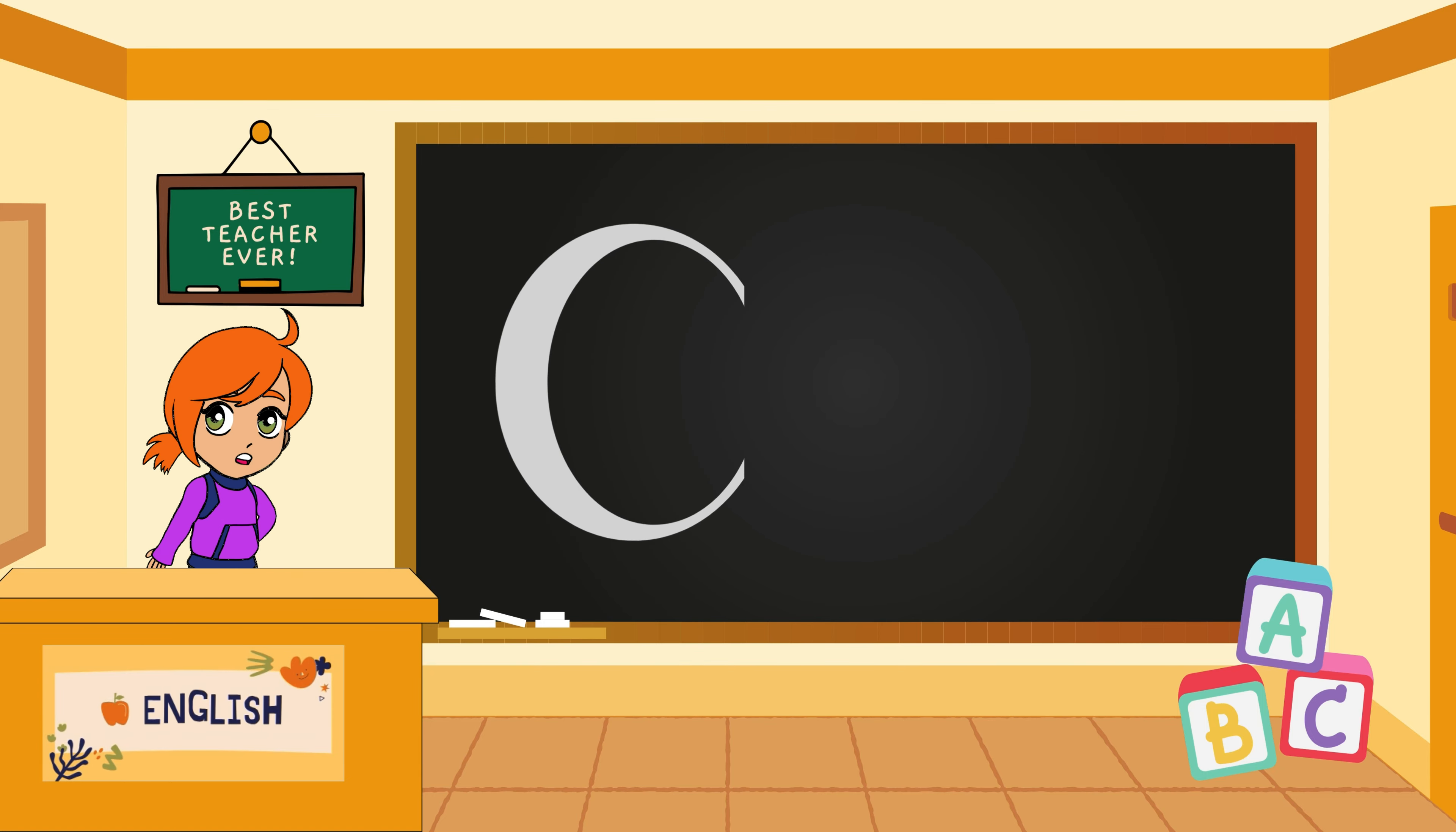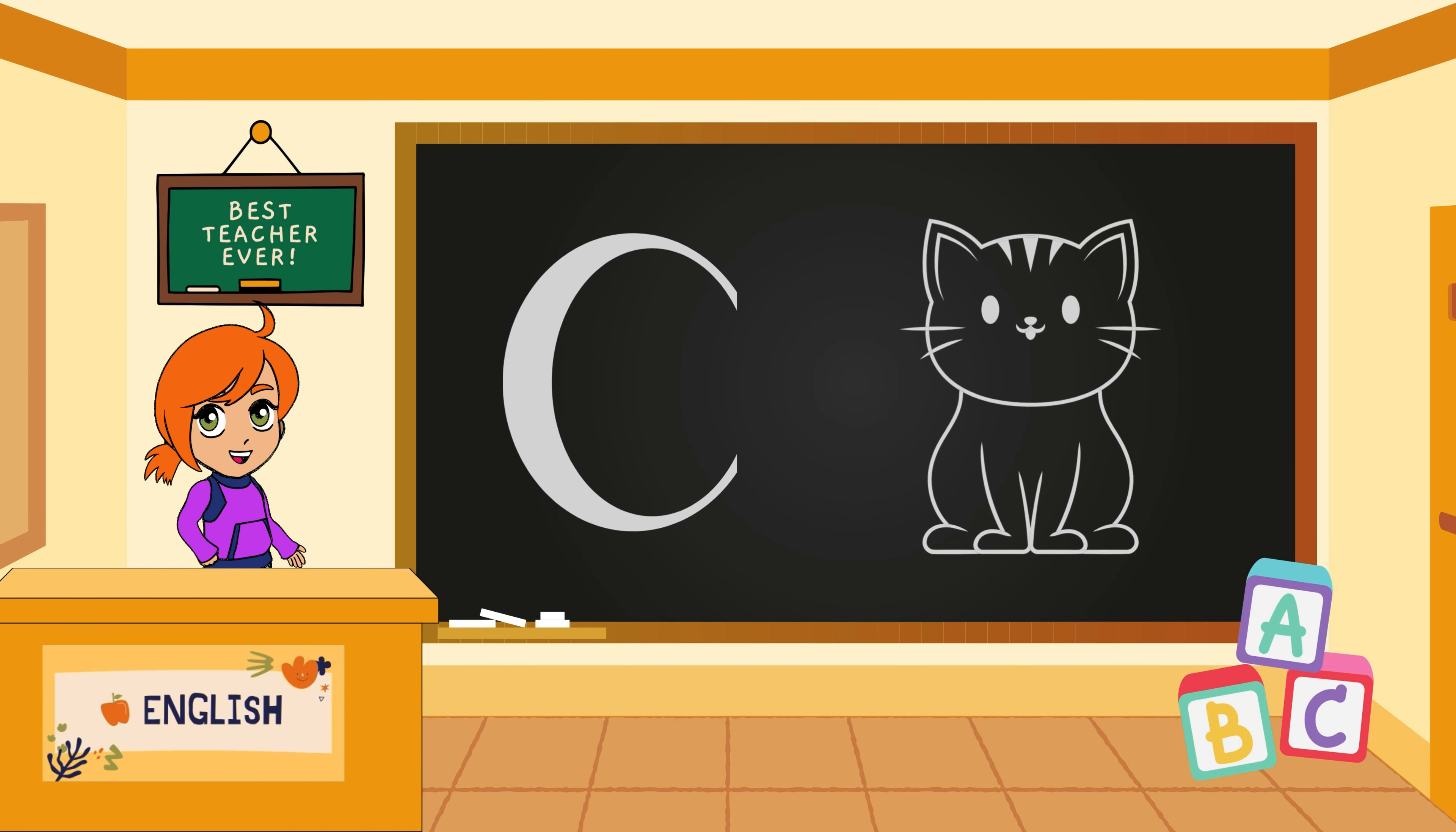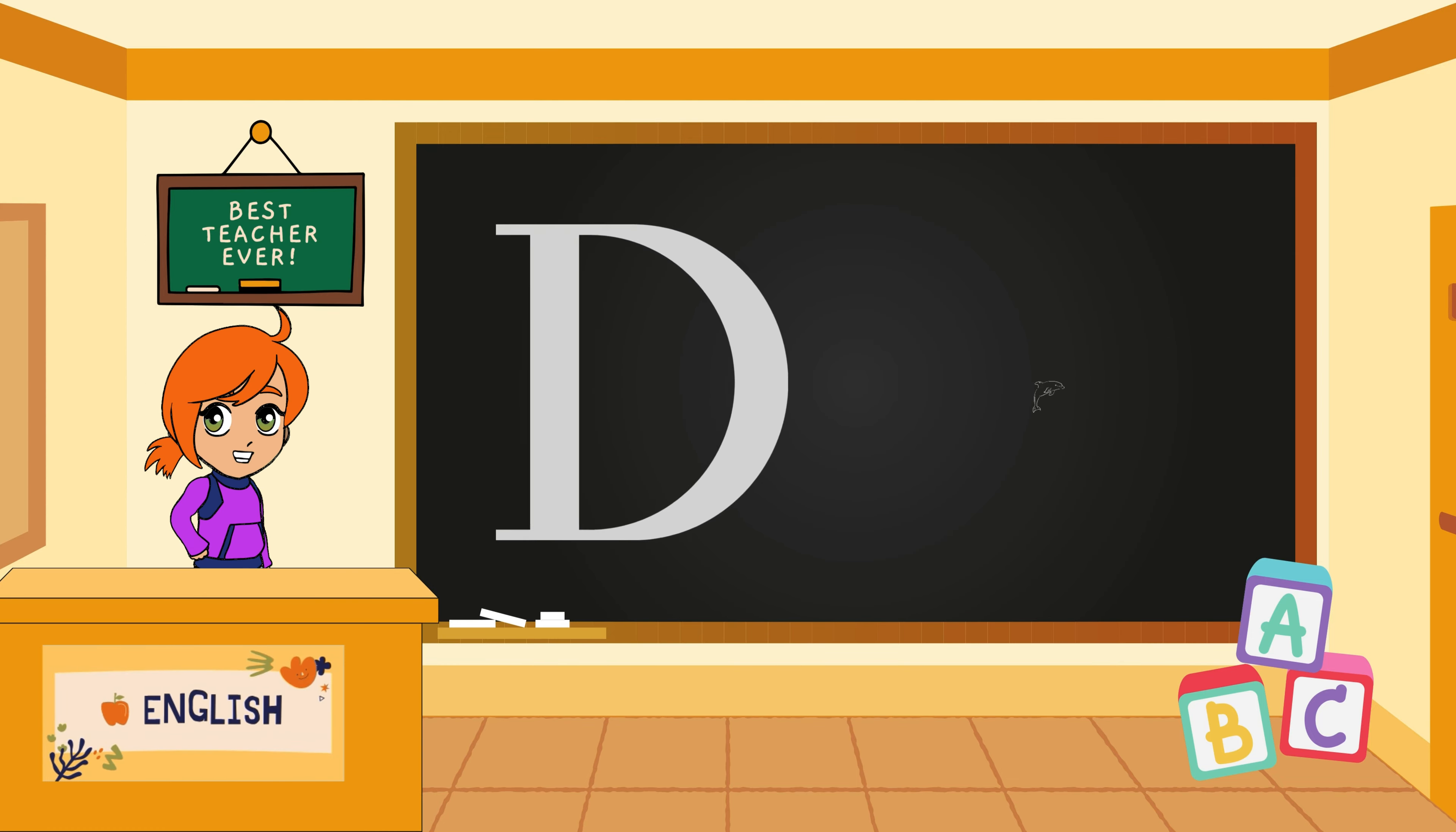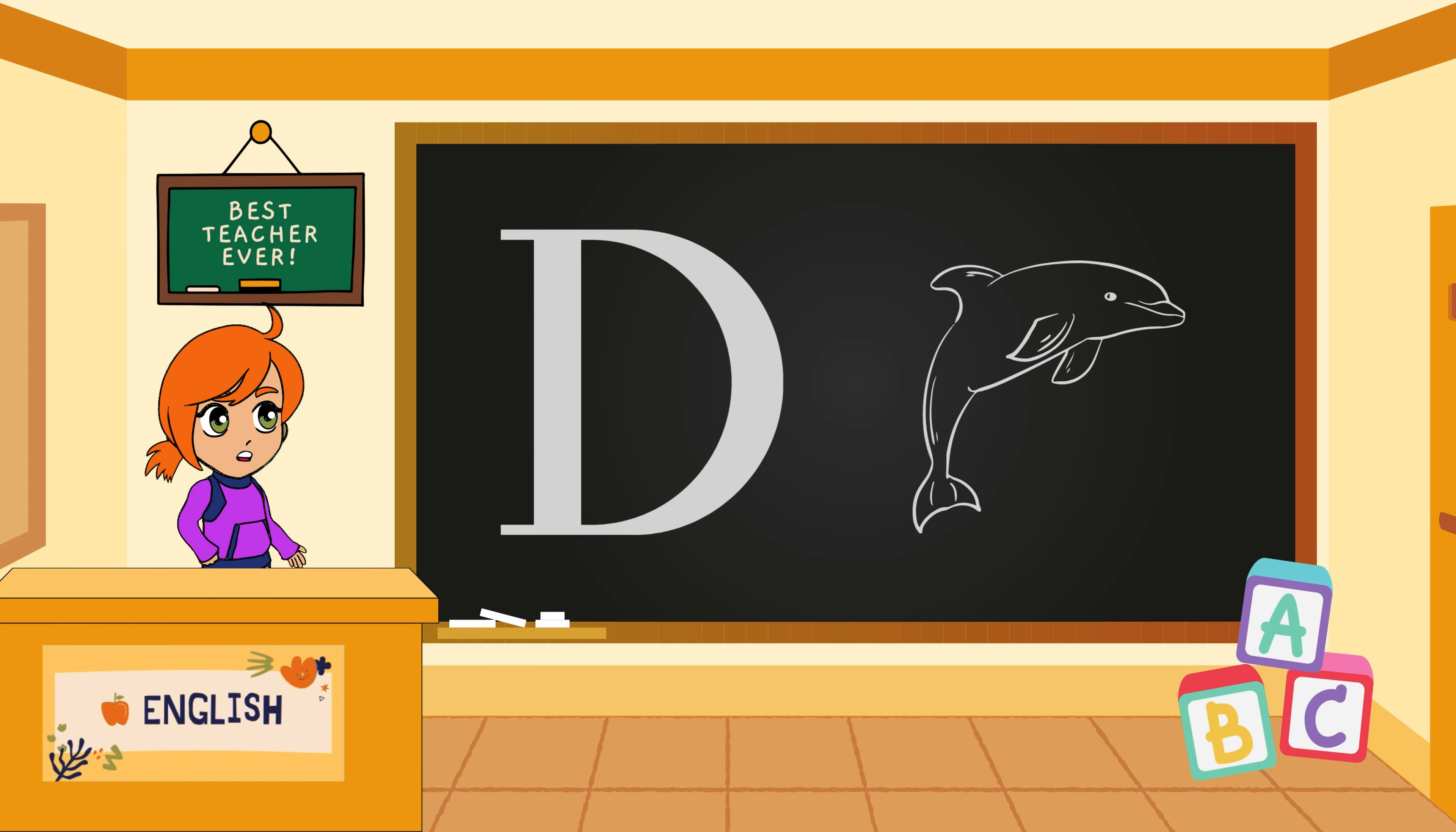Now let's say hello to C, represented by our clever cat friend. C makes the sound kuh like a cat's meow. Look at D dance like a delightful dolphin. D makes the sound duh. Can you dance like D?